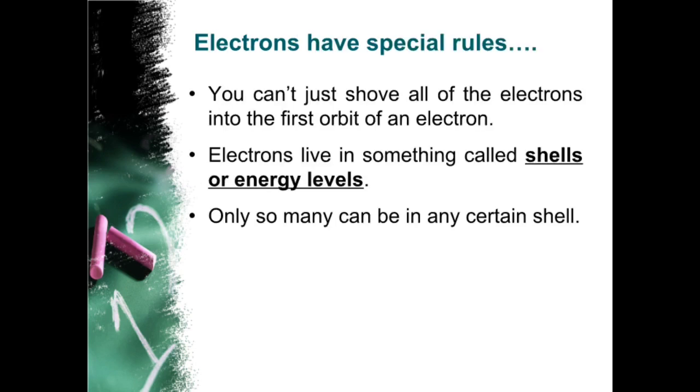Electrons have special rules. You can't just shove all of the electrons into the first orbit of an electron. Electrons live in something called shells or energy levels. Only so many can be in any certain shell.